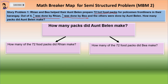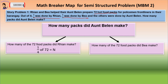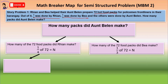Looking at the given packs, one-fourth was done by Rian, and one-third was done by Bea. To answer the first hidden question — how many of the 72 food packs did Rian make — we have one-fourth of 72 equals N. And for the second hidden question — how many of the 72 food packs did Bea make — we have one-third of 72 equals N. Now let us identify the number of food packs Rian made.